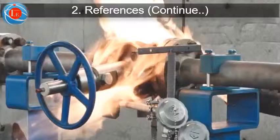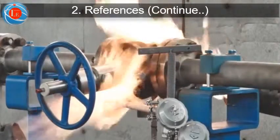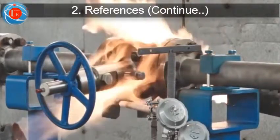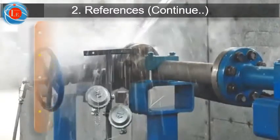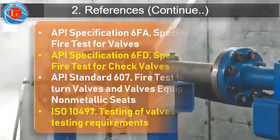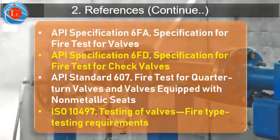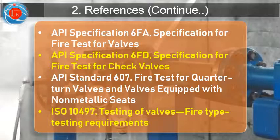This video shows the fire type test for an API 6D valve. The fire tested design of valves shall be qualified by fire type testing in accordance with one of the applicable listed API and ISO standards. During the test, a mock-up valve shall be exposed to a direct fire while it is under specified pressure and temperature for a specific period to ensure valve integrity.